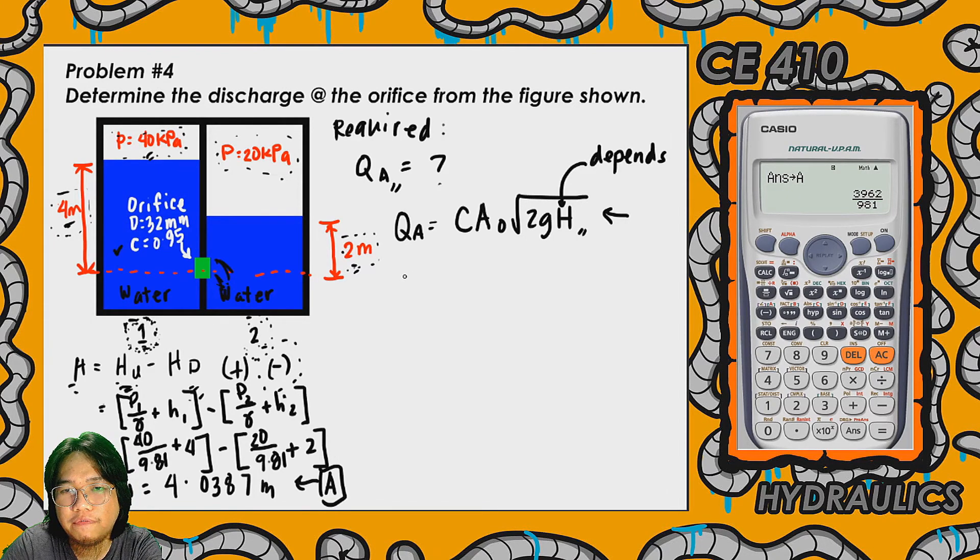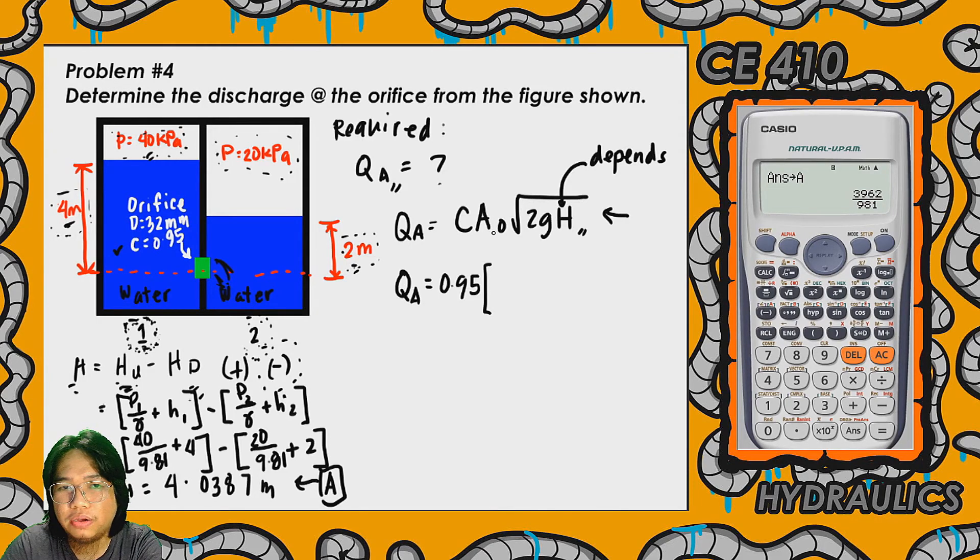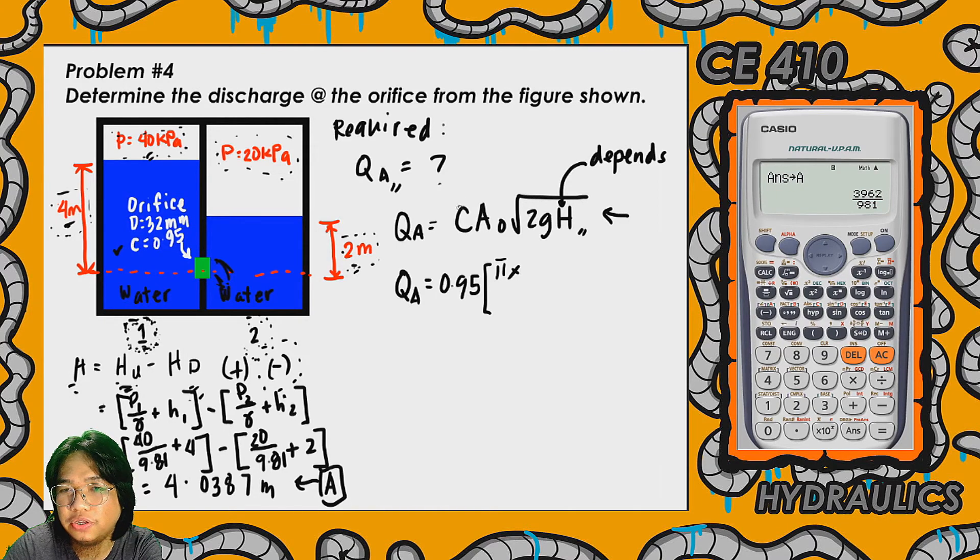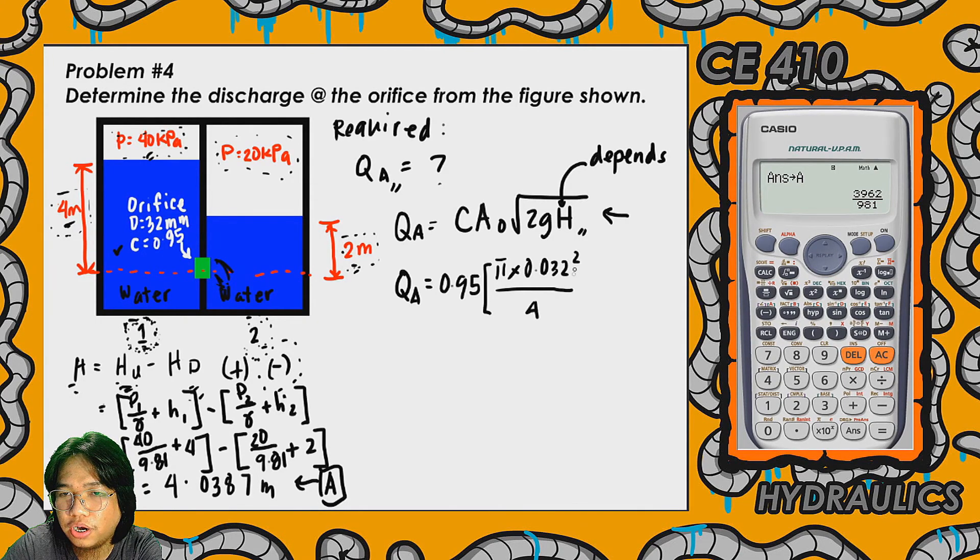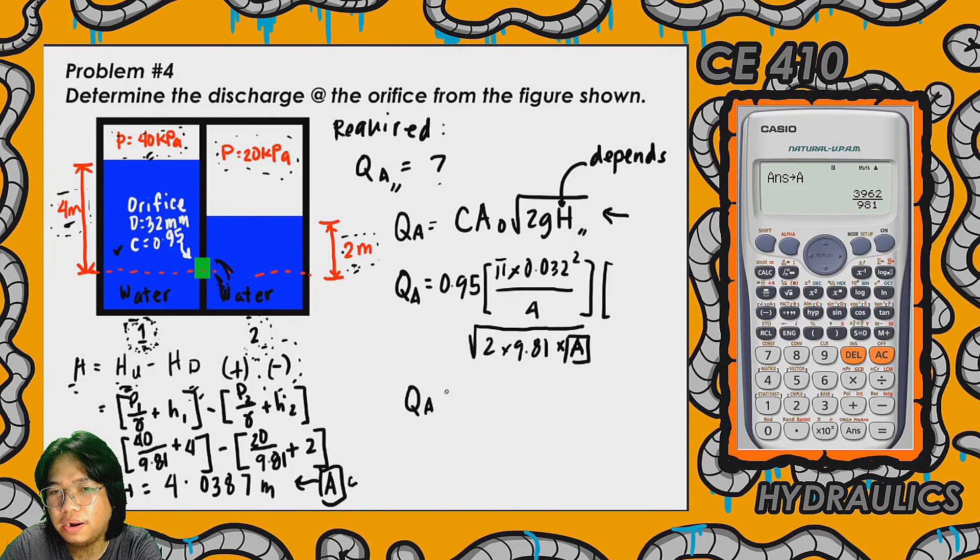Now let's plug in the values in our working equation. Q sub A is equal to C - C is given as 0.95 - times the cross-sectional area of the opening of the orifice. That's pi times D squared. Diameter is 32 millimeters, so that's 0.032 in meters squared, over 4, times the square root of 2 times 9.81 times the stored value at A which is H. Let's compute for the actual discharge.